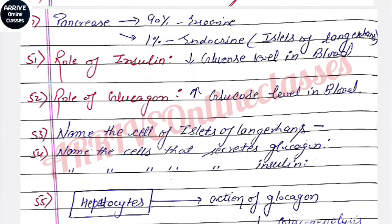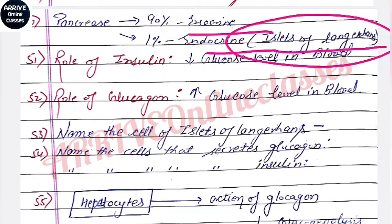The pancreas is a heterocrine gland, which acts as both exocrine as well as endocrine. In its endocrine part, there are important cell types.